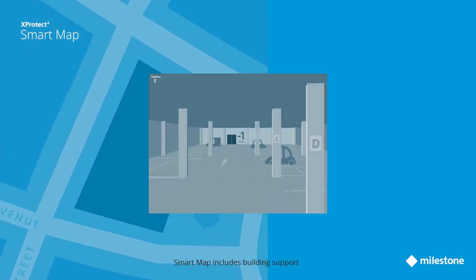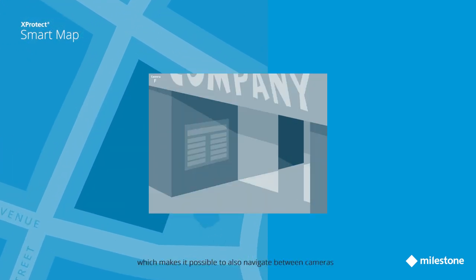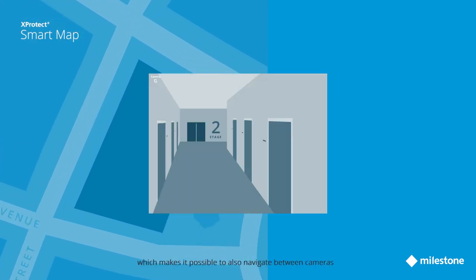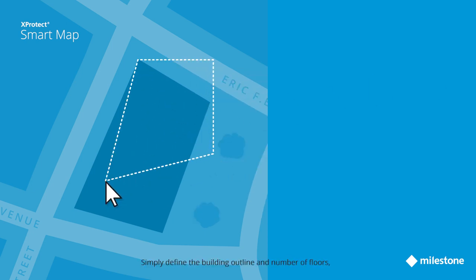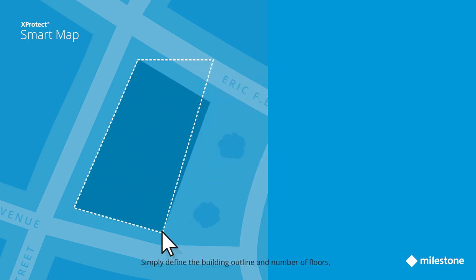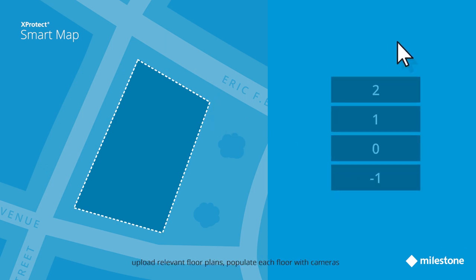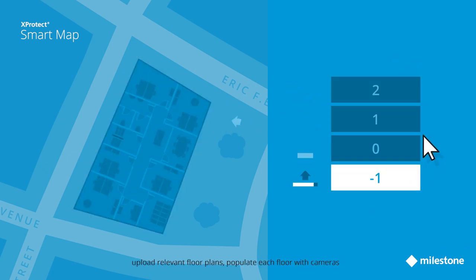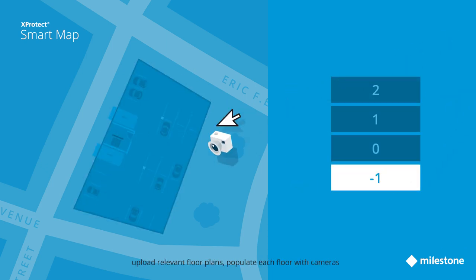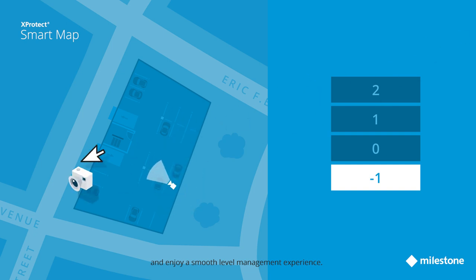Smart Map includes building support, which makes it possible to navigate between cameras located on different floors in the same building. Simply define the building outline and number of floors, upload relevant floor plans, populate each floor with cameras, and enjoy a smooth level management experience.